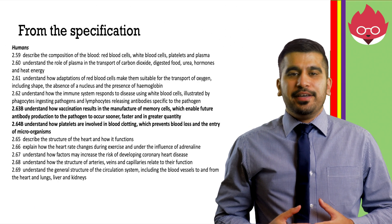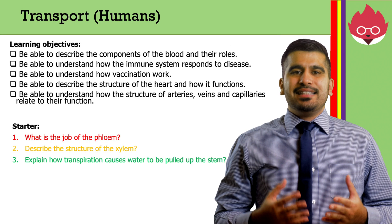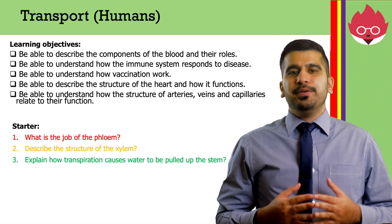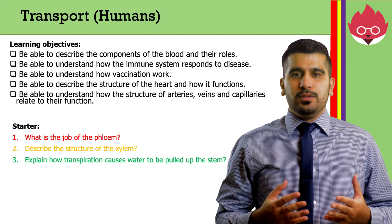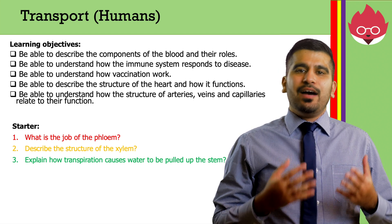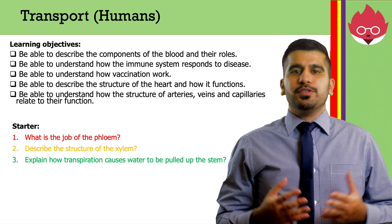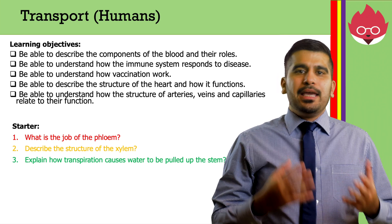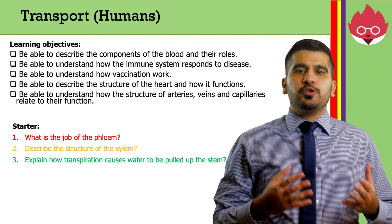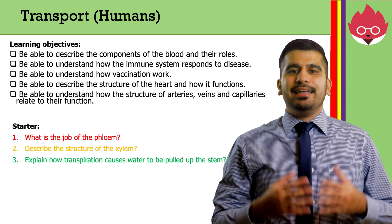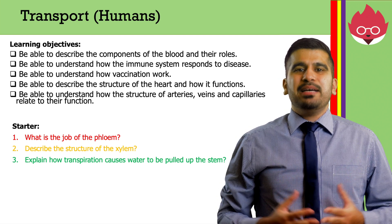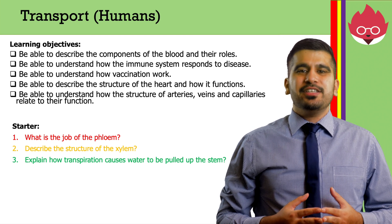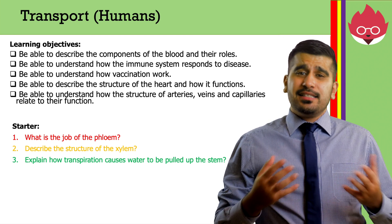These are the specification points we'll be covering. In today's lesson, we want to be able to describe the components of blood and their roles, understand how the immune system responds to disease, understand how vaccinations work, describe the structure of the heart and how it functions, and understand how the structure of arteries, veins, and capillaries relate to their function.